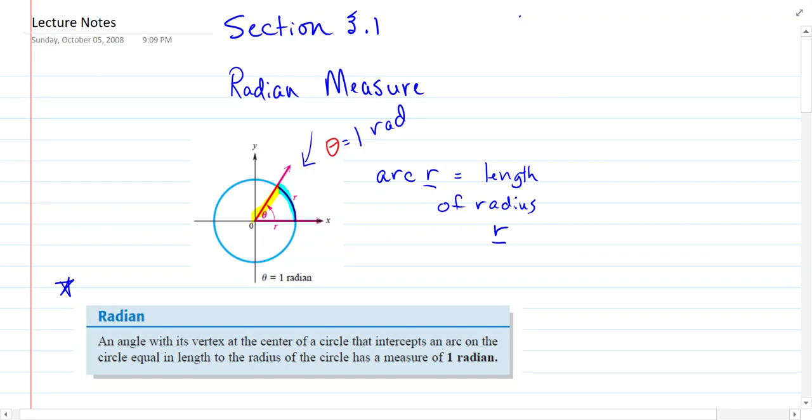So if we go right here, an angle with its vertex at the center of a circle that intercepts an arc. Here's the circle, here's the vertex, this arc here, this r, that's equal in length to the radius of the circle has a measure of one radian.